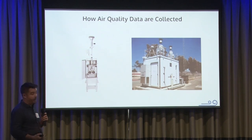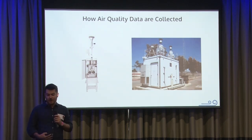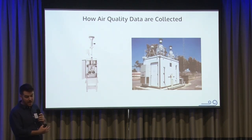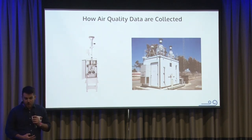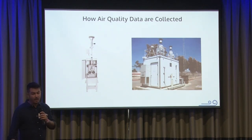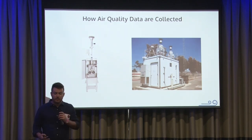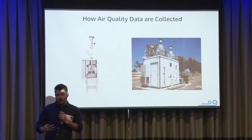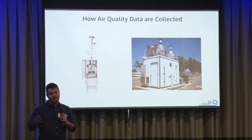Looking at how air quality is collected: these devices — one's even bigger than a device, it's kind of a little shed — are what's often called a reference grade monitor. The one on the left is called a BAM. These are very expensive tools, representing the highest kind of scientific quality — the gold standard. They can cost in the range of tens of thousands to hundreds of thousands of dollars to acquire, and often hundreds of thousands of dollars to maintain. These are also often referred to as regulatory machines, used in countries where the government regulates air pollution. Generally, regulatory devices are reference devices, but not all reference devices are regulatory.